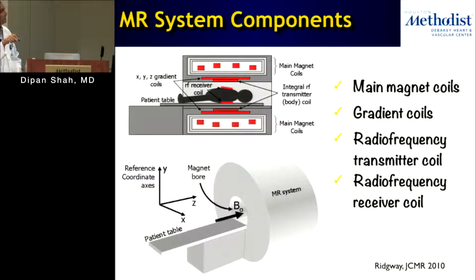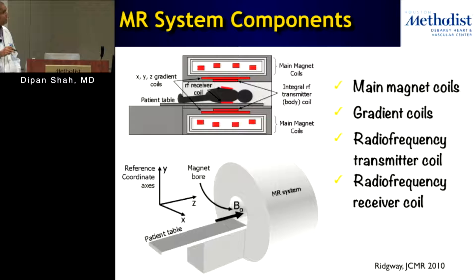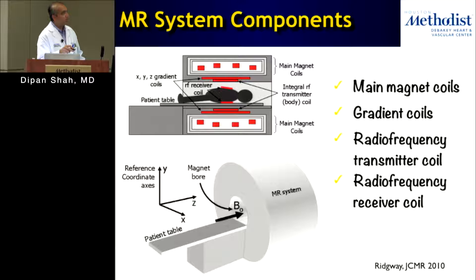Inside the scanner itself you have the table that moves in and out, the main magnetic coils which produce the main magnetic field, a set of XYZ gradient coils that cause a slight alteration to the magnetic field, and an integrated RF transmitter which transmits radio frequency energy. So we have: main magnetic coils, gradient coils, RF transmitter coil, and radio frequency receiver coils.